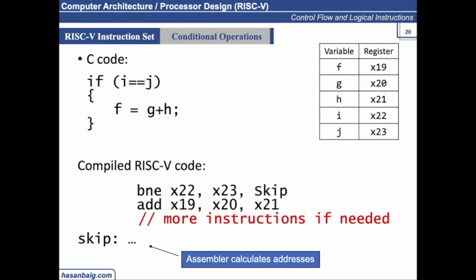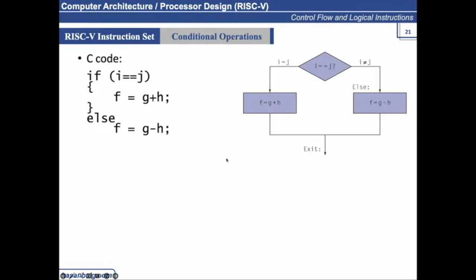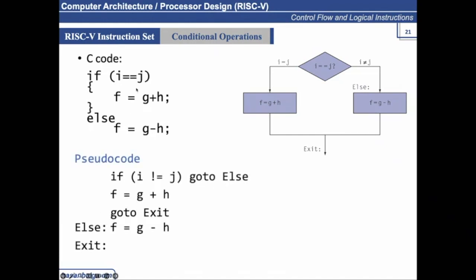Let's make the code a little more complicated. Instead of having only an if block, we have an if-else block. Once the condition satisfies, it takes a branch to perform addition. If the condition does not satisfy, it performs subtraction. In the pseudocode, the condition to check is: if i is not equal to j, go to else. Else is where you perform g minus h. The instructions are executed in flow from top to bottom unless a branch is taken.